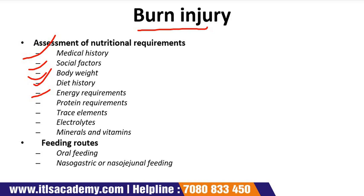Regarding energy assessment, thermal injury results in higher production of catabolic elements, producing a hypermetabolic response. This results in accelerated protein and fat breakdown and altered carbohydrate metabolism. Energy requirements are assessed using specific formulas. For protein requirements in adults, 20% of energy is given as protein, and in children less than one year, reference nutrient intake (RNI) is used.